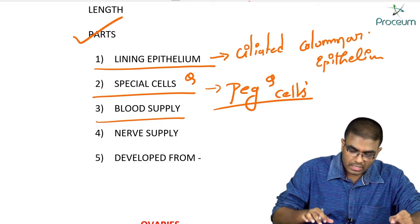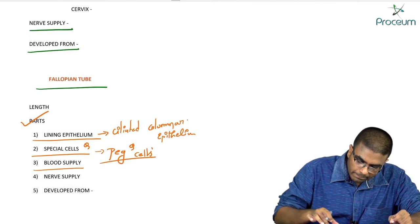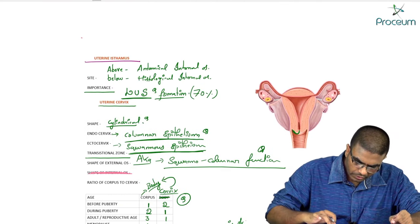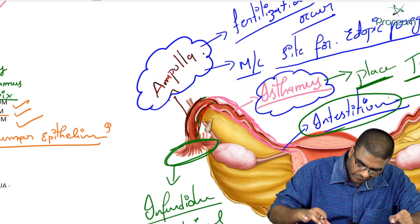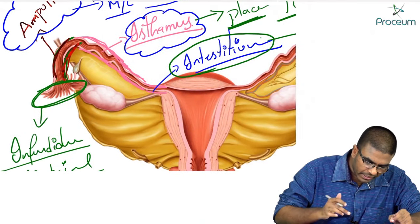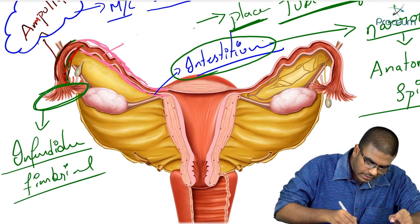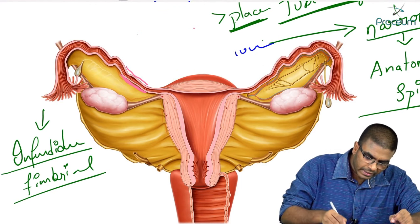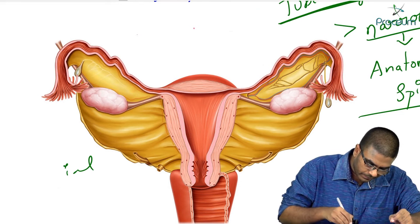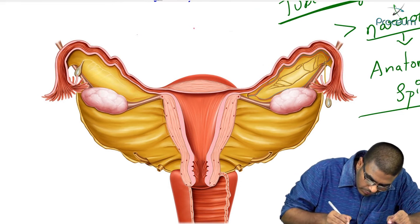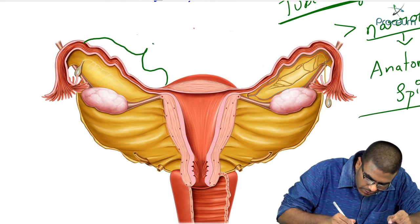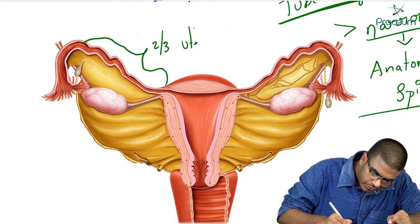What is the blood supply of the fallopian tubes? The medial two-thirds of the fallopian tube gets its blood supply from the uterine artery.